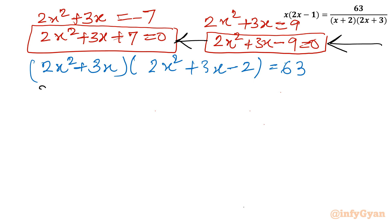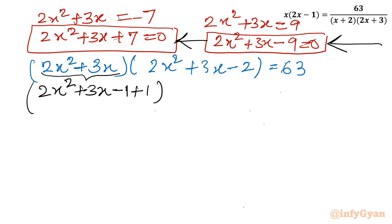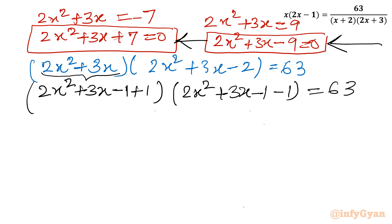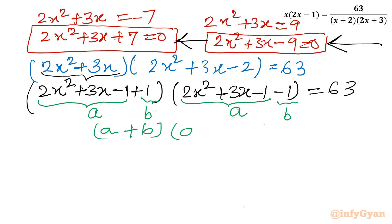Now I will consider 2x squared plus 3x and do a manipulation: add and subtract 1 in the first bracket to get (2x squared plus 3x minus 1 plus 1), and in the second bracket write (2x squared plus 3x minus 1 minus 1) equal to 63. If I consider 2x squared plus 3x minus 1 as a and 1 as b, this becomes (a plus b)(a minus b), which is the difference of two squares identity.